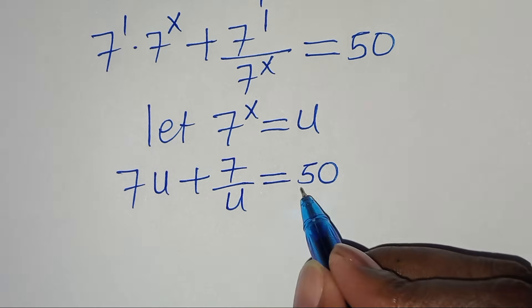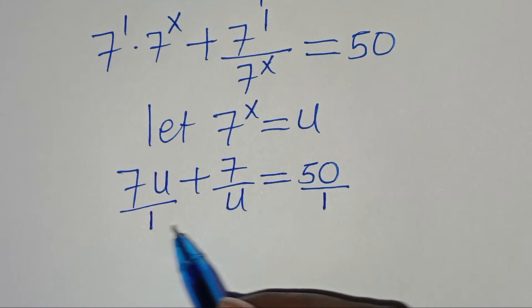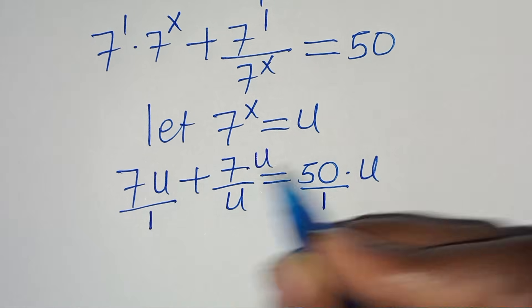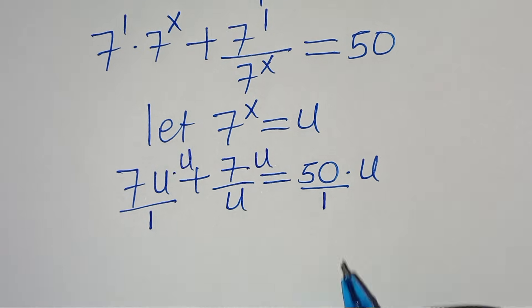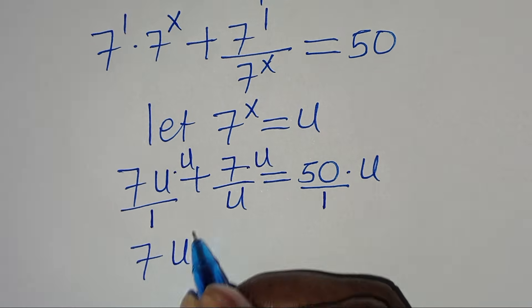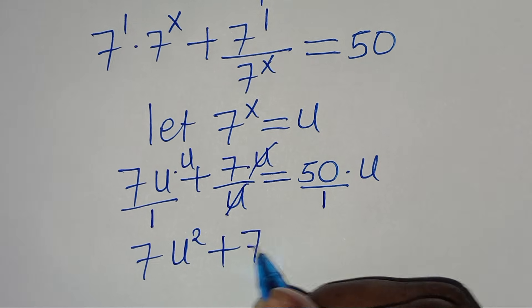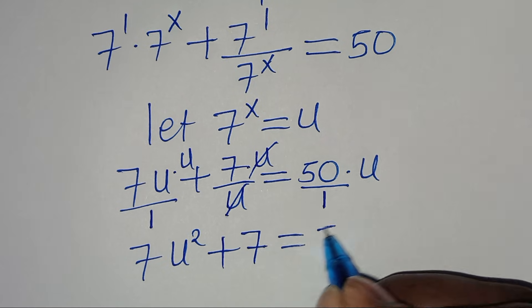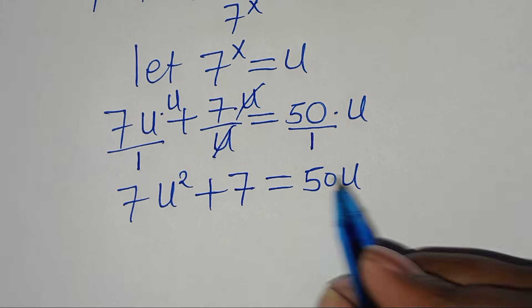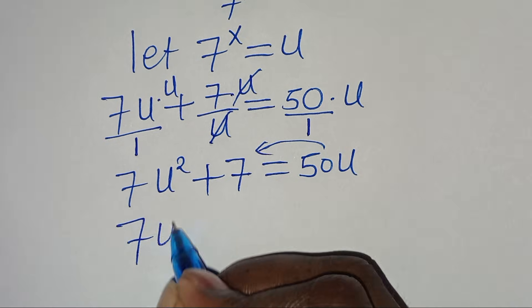Now 50 is our number so this is over 1, and 7u is our number so this is over 1. The LCM is u, so let's multiply everything by u. We get 7u squared plus 7 is equal to 50u.